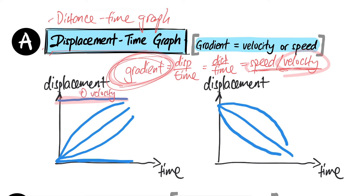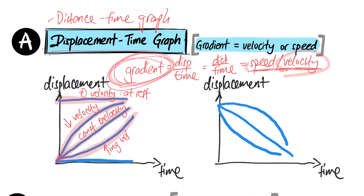Applying this: a flat line on a displacement-time graph means zero gradient, which means zero velocity — the object is at rest. A straight line going upward at constant steepness means constant gradient, so constant velocity or constant speed. A curve getting less steep means decreasing velocity or decreasing speed. A curve getting steeper means increasing velocity or increasing speed. And a flat line along the time axis again means zero velocity — at rest.